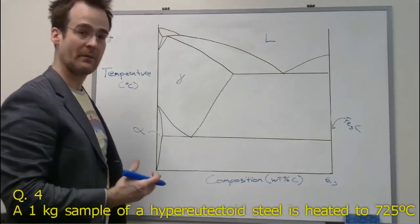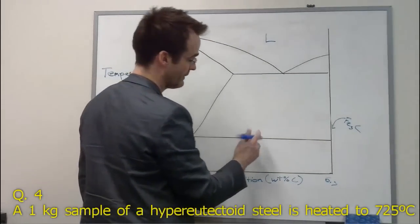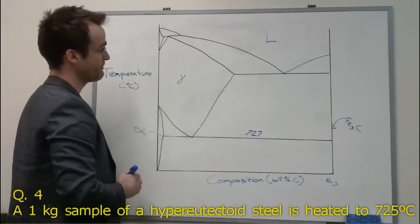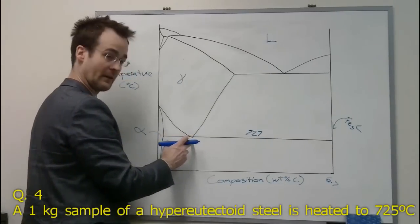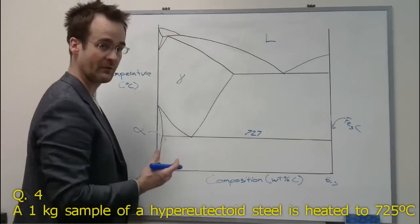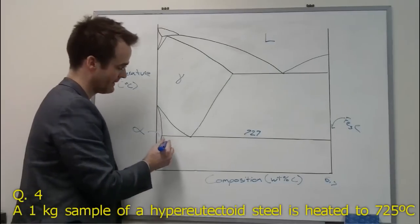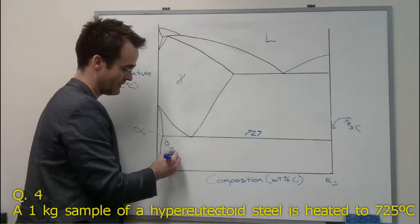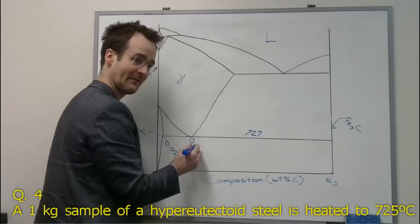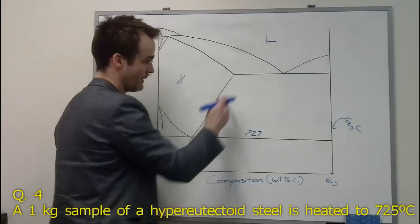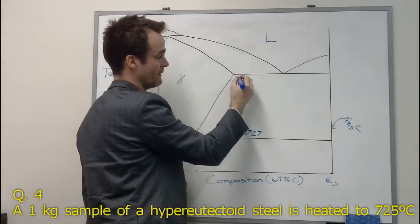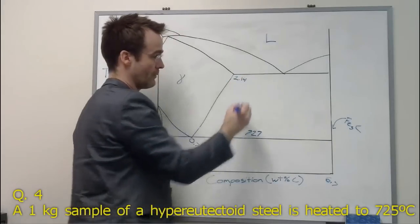Let's label some temperatures. The eutectoid composition of carbon concentration in ferrite is 0.022 weight percent carbon. The eutectoid composition itself is at 0.76 weight percent carbon. The cementite phase is at 2.14 weight percent carbon.